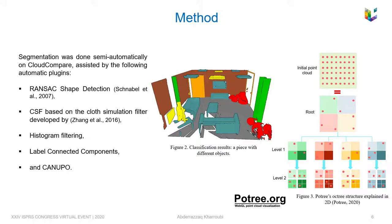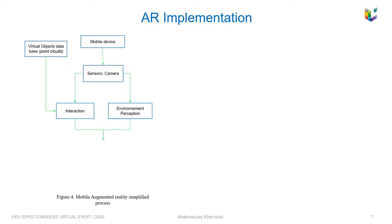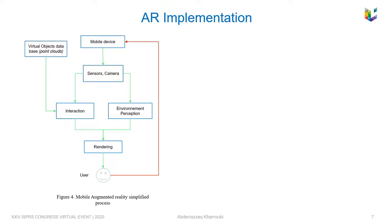This is the typical AR process we used. The camera and other sensors are used to continually gather ambient information. The environment perception based on computer vision algorithms analyzes the captured information for real-world recognition and perception.